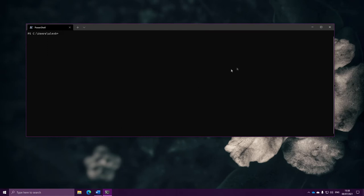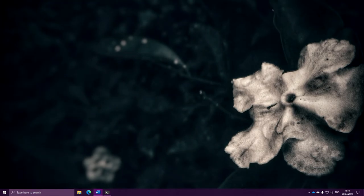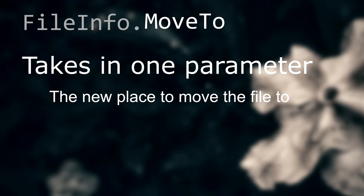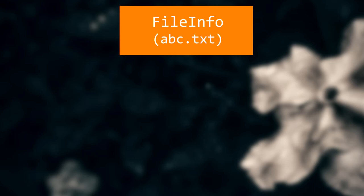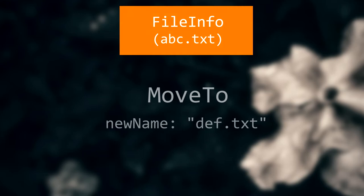I want to kick this episode off with parameters in methods, because we haven't actually used them yet. Let's take a look at the moveTo method on file info objects. This method does not give back anything, but it takes in one parameter — the new place we want to move the file, i.e., the new name we want to give it. This parameter takes in a string. So if I had a file object for abc.txt and wanted to rename it to def.txt, I'd run this method and put def.txt into the new name parameter.